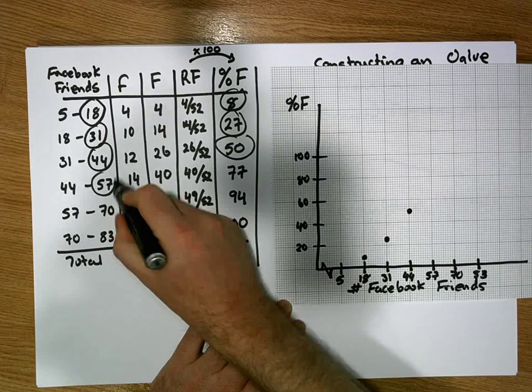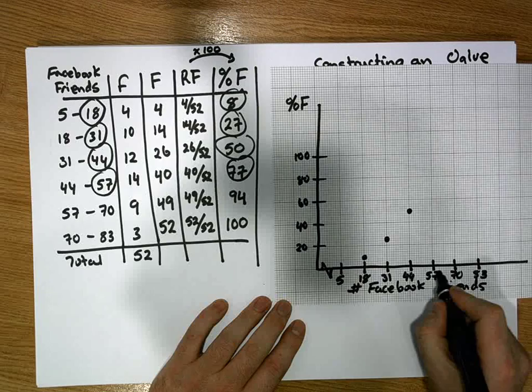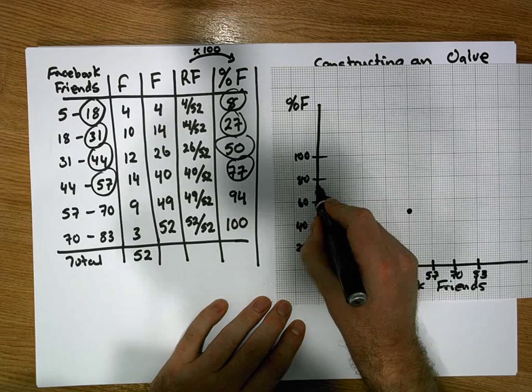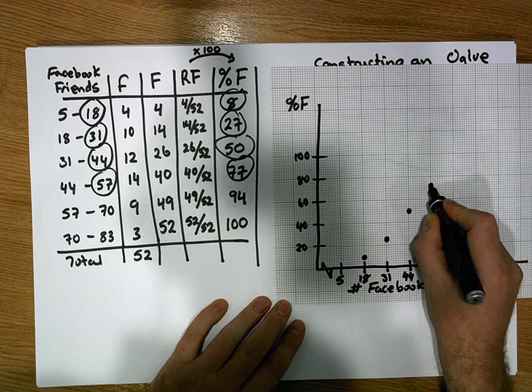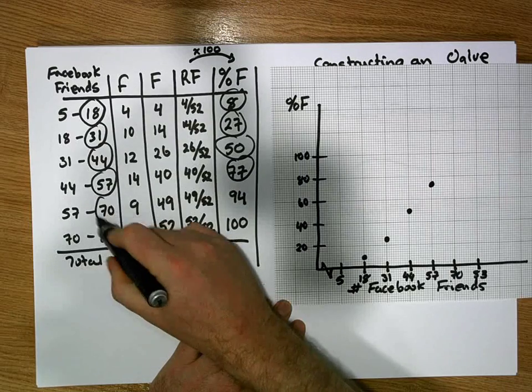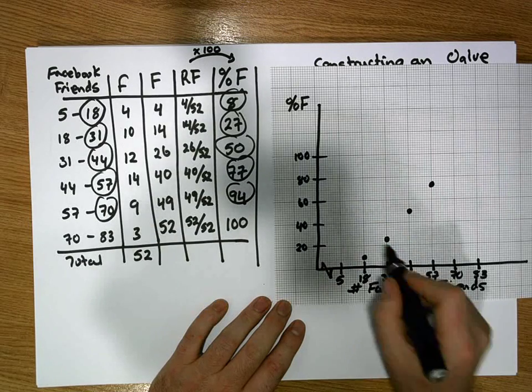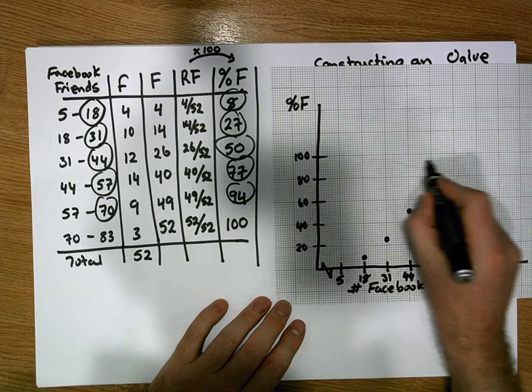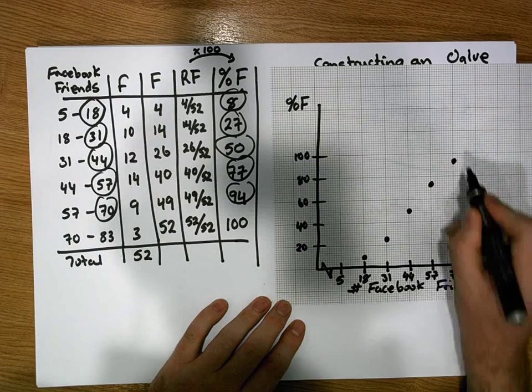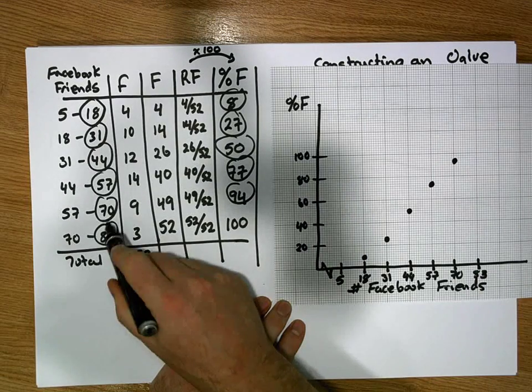At 57, I'm going to go up to 77. So here's 57. 77 seems to be in around here somewhere. And at 70, I'm going to go up to 94. So here's 70. 94 is in around here.